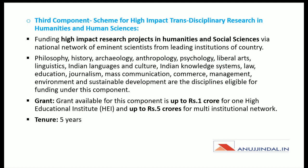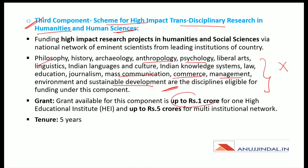The third and final component under the scheme is the Scheme for High Impact Transdisciplinary Research in Humanities and Human Sciences. Under this component, various disciplines are covered such as philosophy, history, archaeology, anthropology, psychology, mass communication, commerce, management, sustainable development, etc. The grant for this component is up to rupees 1 crore for one higher educational institution and up to rupees 5 crore for a multi-institutional network. The tenure of this component is up to 5 years.